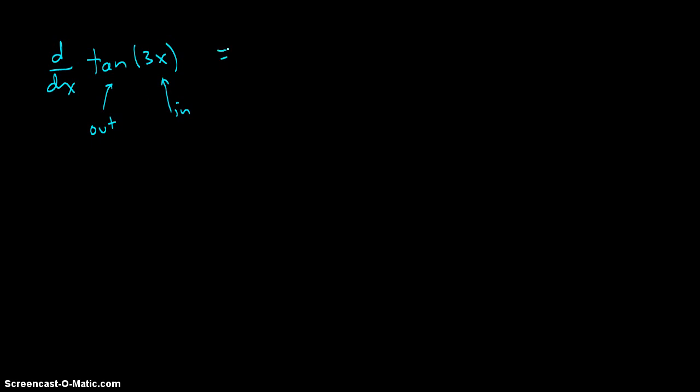The chain rule says take the derivative of the outside and multiply that by the derivative of the inside. So it's the derivative of the outside times the derivative of the inside.